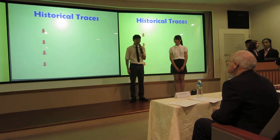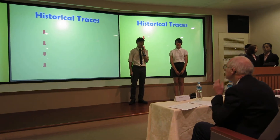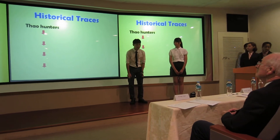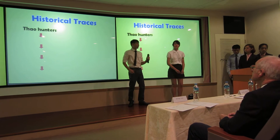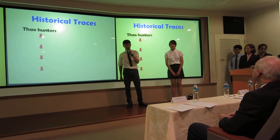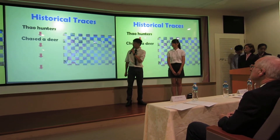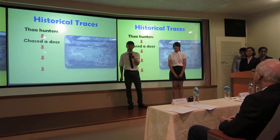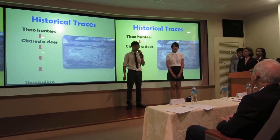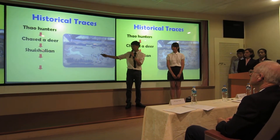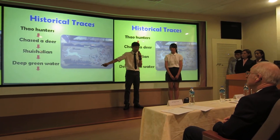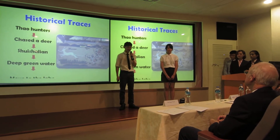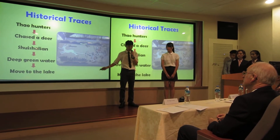Historical background. According to Nantong legend, a long time ago a group of South hunters chased a rare and beautiful deer for days, going up river and across mountains. Until finally, they entered the mountains of the plains called Shushalien. Here, they discovered the deep green water of Summerlake and moved their entire tribe to this beautiful place.